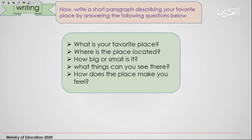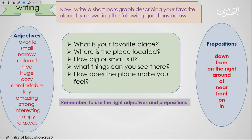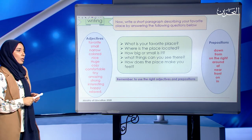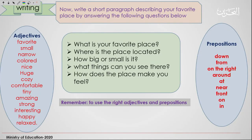We wrote the whole descriptive paragraph by answering a set of questions. Now I want you to similarly describe a place that you like by answering these questions. Remember to use the right adjectives and prepositions — these are examples, but you can add your own. Write a short paragraph describing your favorite place by answering these questions. Note the questions on your piece of paper so you can refer to them later — I'll give you one to two minutes.